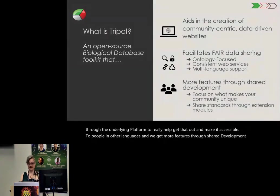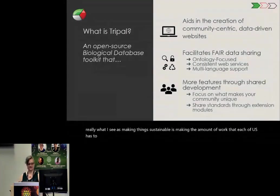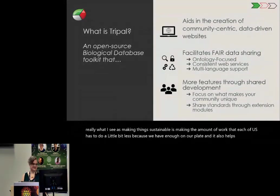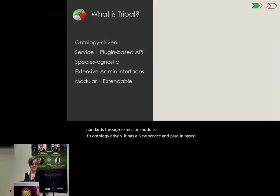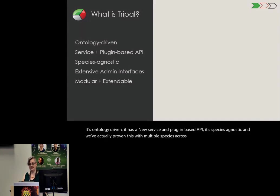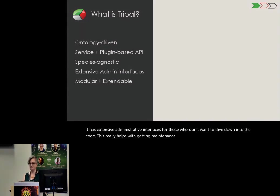We get more features through shared development, which is really what I see as making things sustainable — making the amount of work that each of us has to do a little bit less. It also helps share standards through extension modules. It's ontology-driven, has a new service and plugin-based API, and is species agnostic. We've proven this with multiple species across many kingdoms. It has extensive administrative interfaces and is modular and extendable.